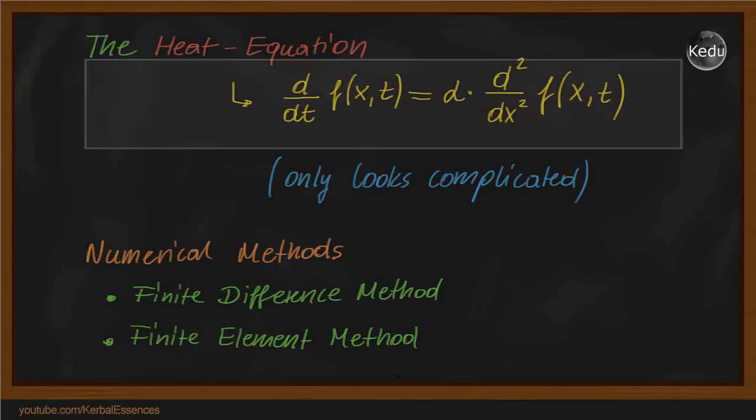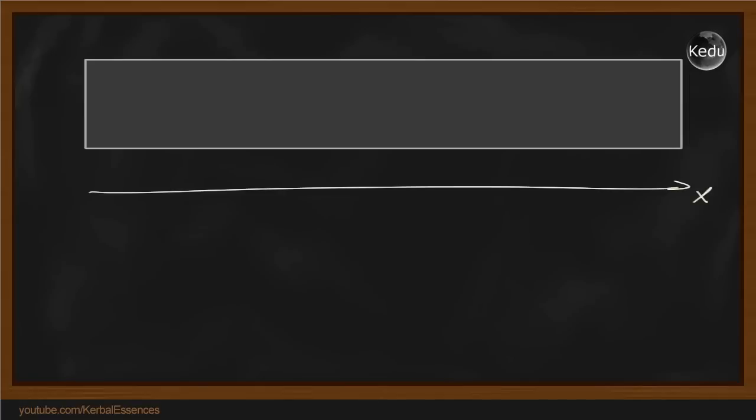Calculating the temperatures inside such a plate for example requires you to set some boundaries. A computer can't calculate an infinite amount of values all over the plate. It would take forever. Instead we set a finite number of elements or points.